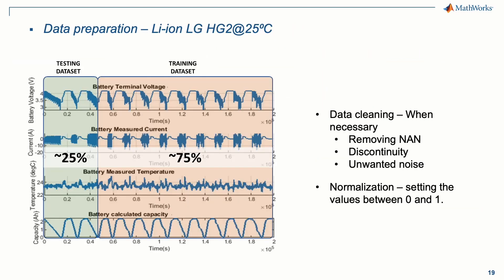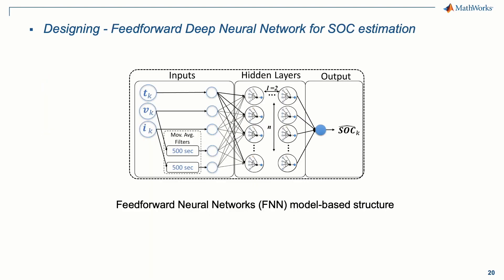Before the training process, data preparation is a very important step. It's necessary to check and clean the data as well as normalize its vectors to improve training and accuracy of the model. Normalization is a very common procedure when training a neural network. The type of neural network we are discussing in this seminar is the feedforward neural network, or FNN. However, different machine learning approaches can be used for this purpose, for example, recurrent neural networks such as LSTM.